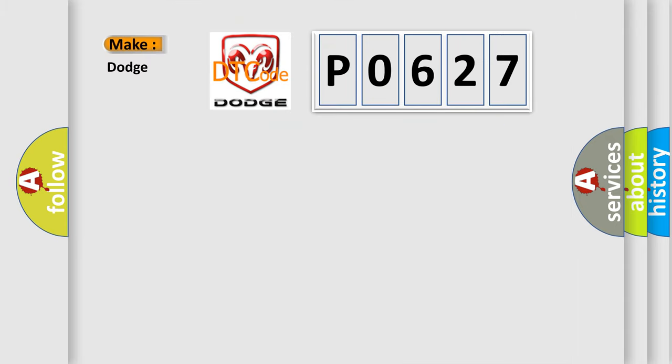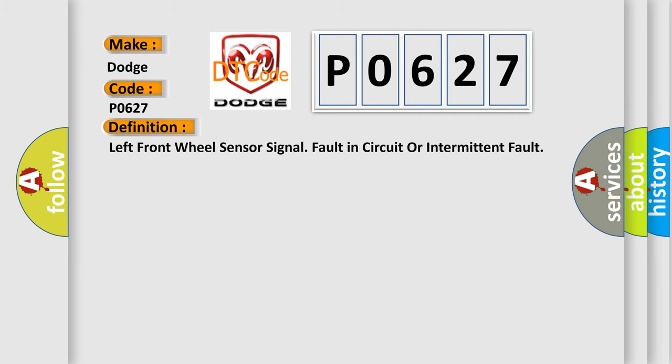So, what does the diagnostic trouble code P0627 interpret specifically for Dodge car manufacturers? The basic definition is: Left front wheel sensor signal fault in circuit or intermittent fault.